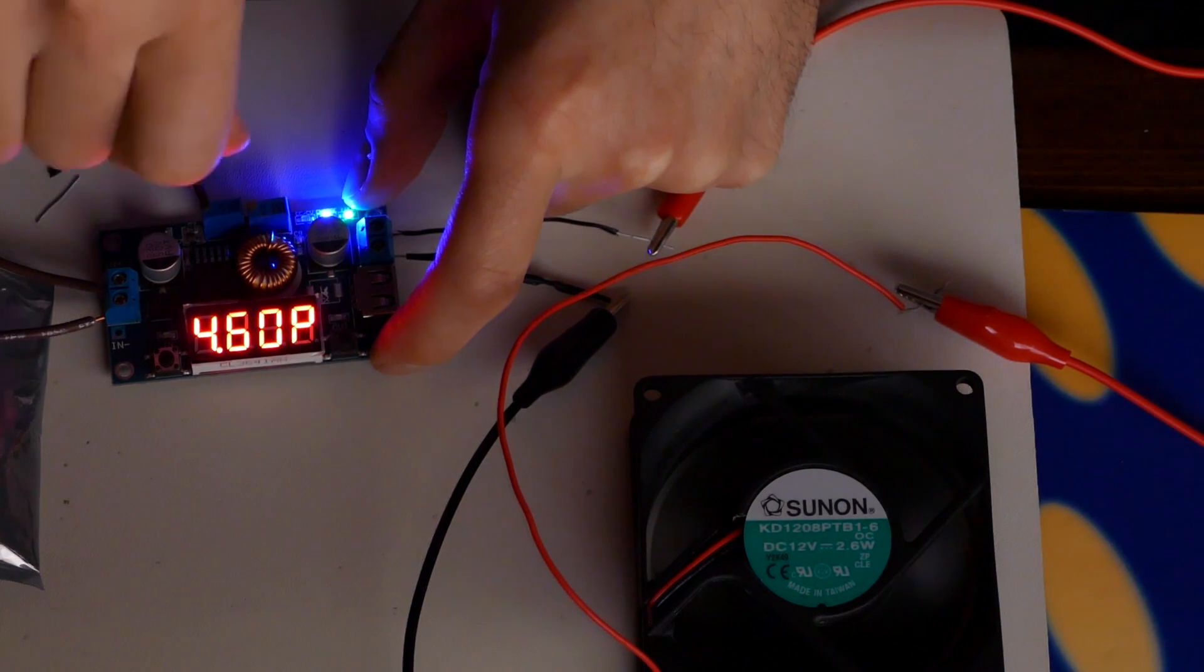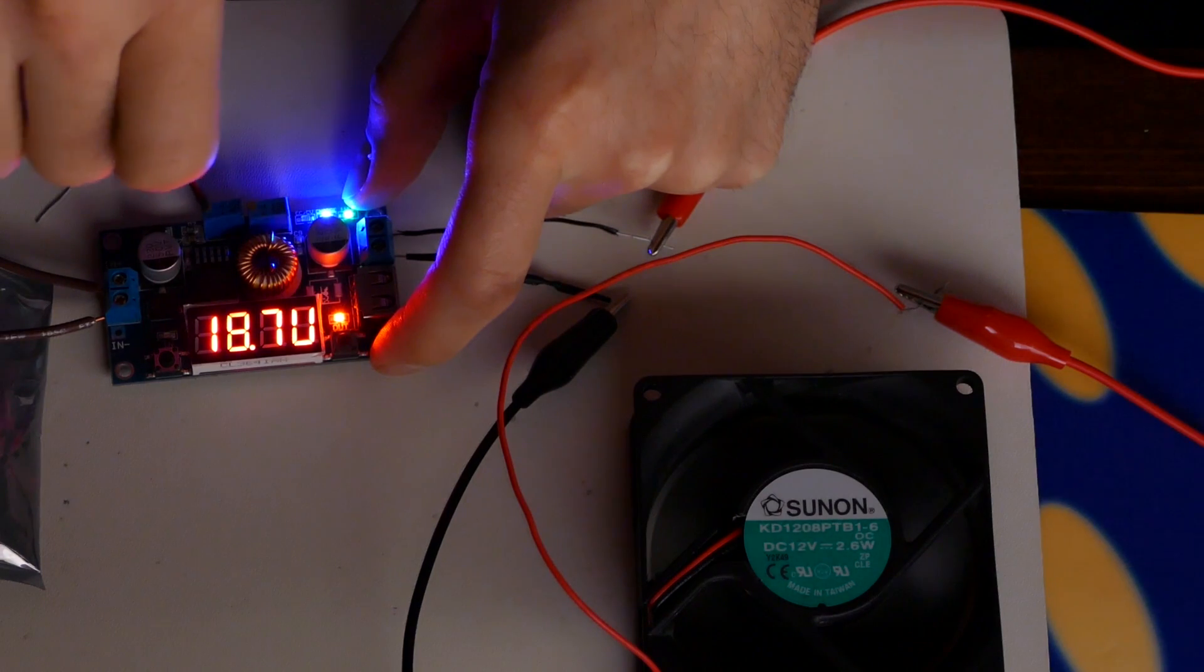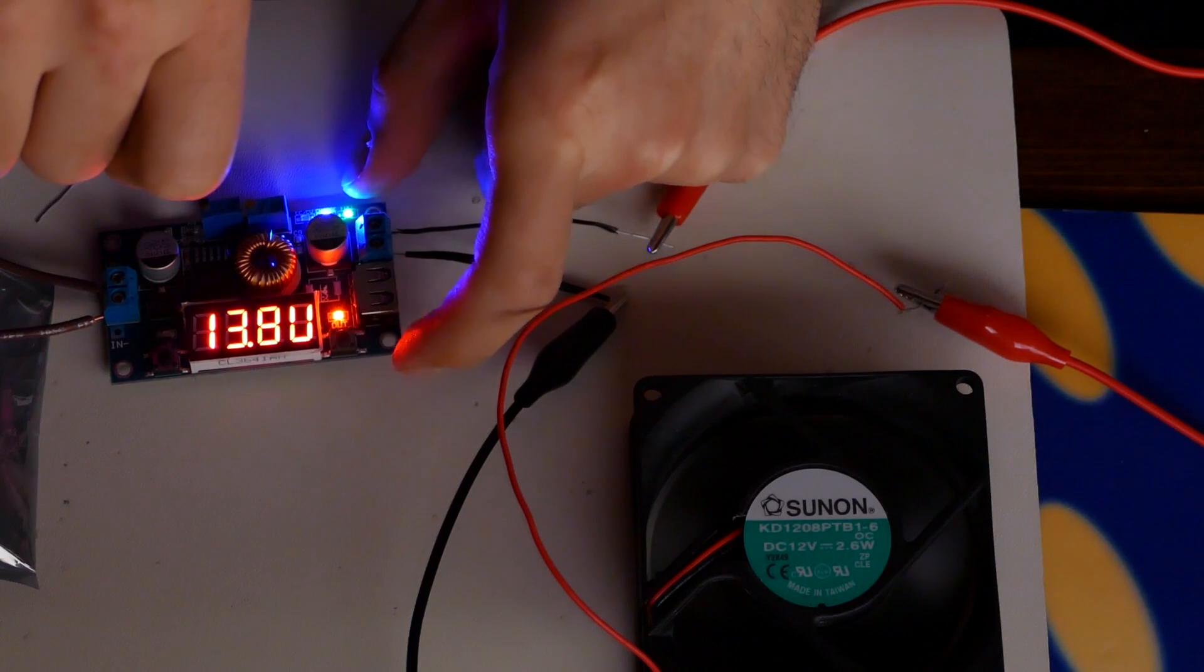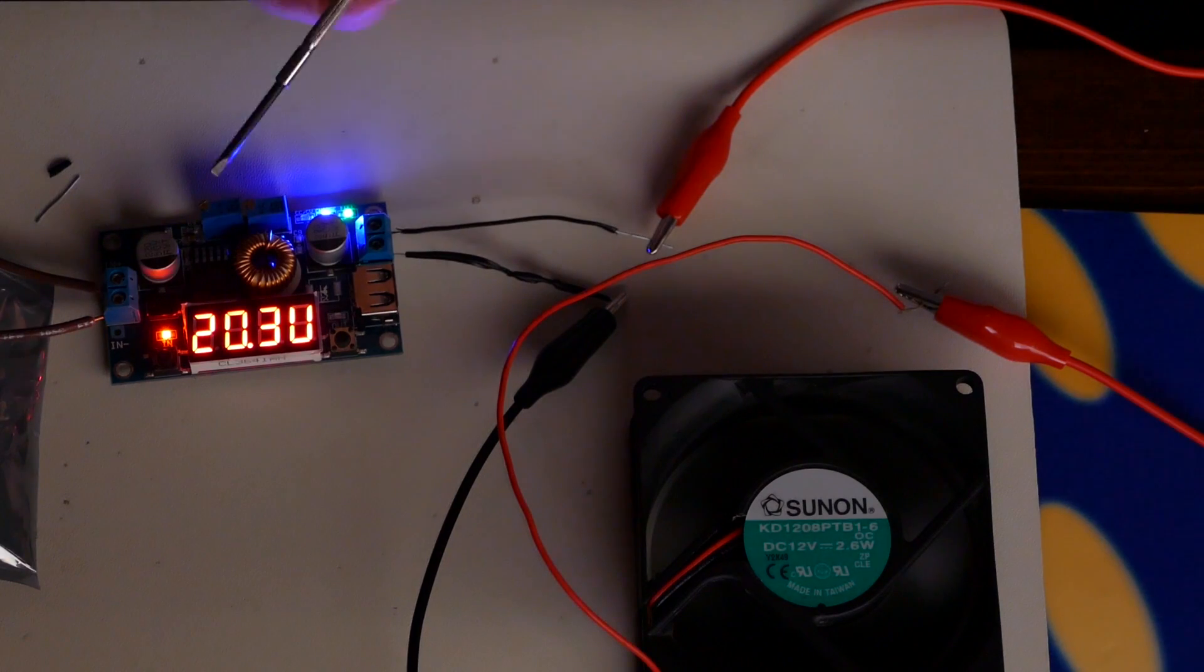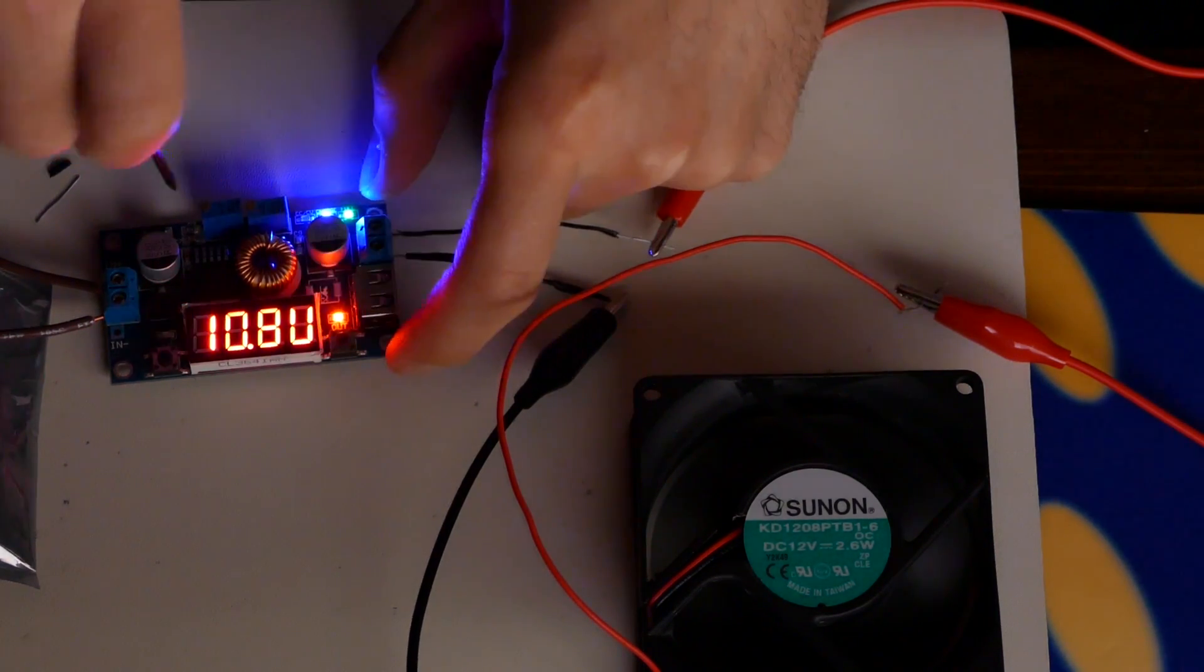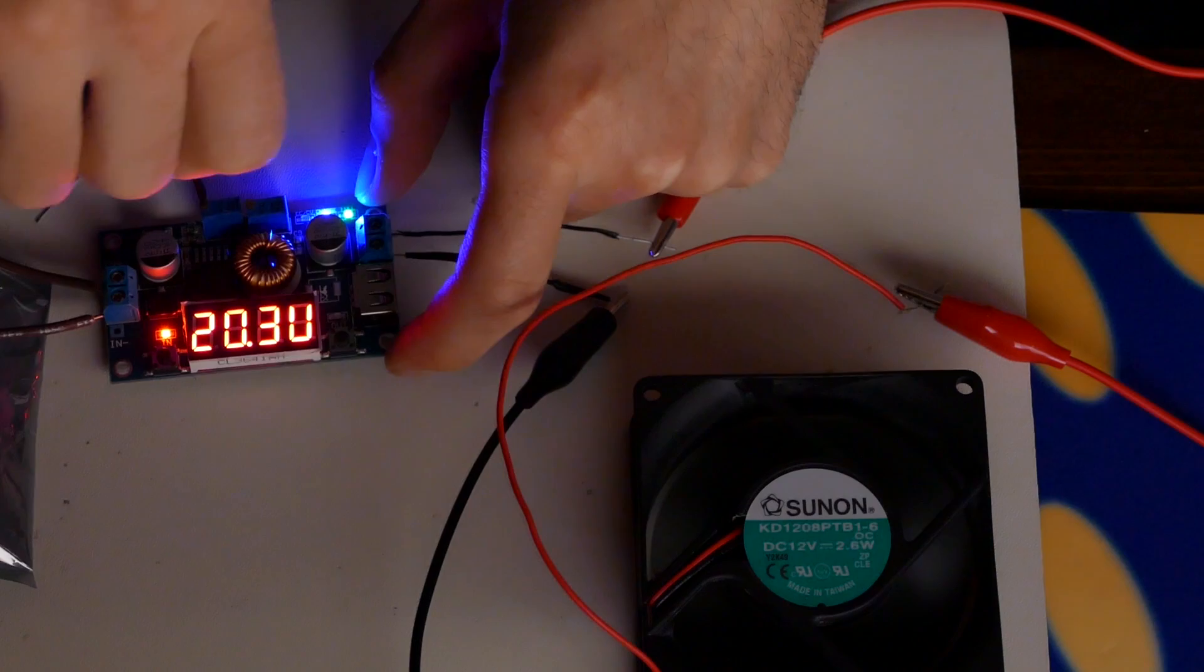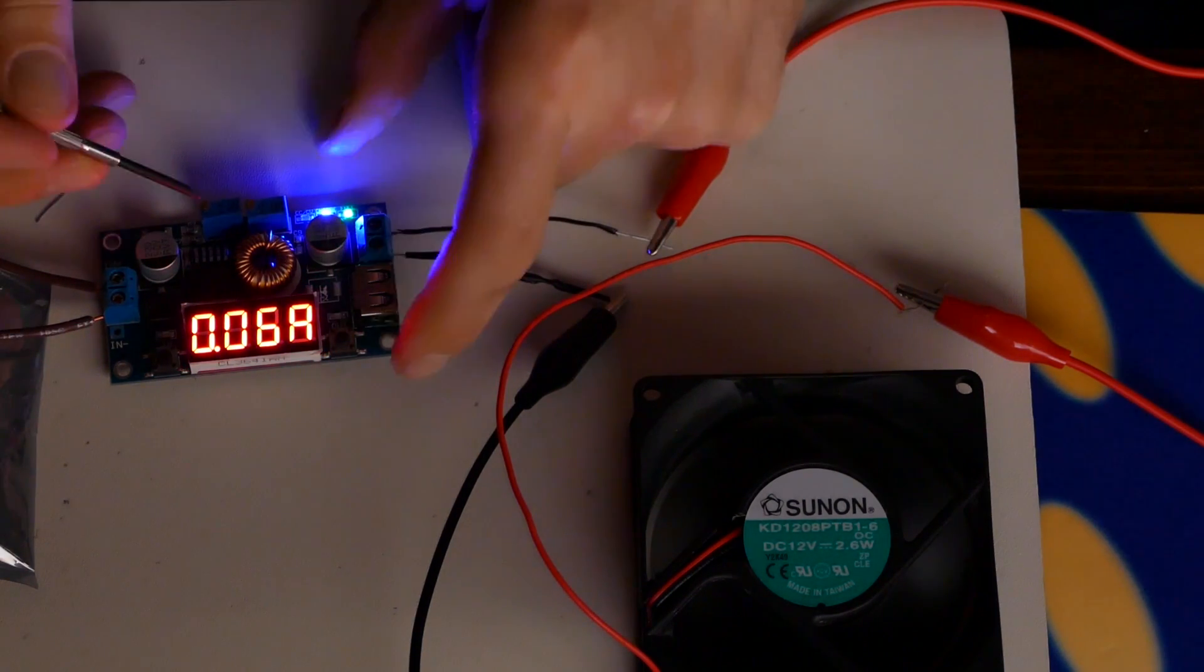So let's turn the voltage down. We should make these screws a little bit bigger. Here it's spinning down. Now you can see that we have 20 volts in, 11 volts out. Turn it down even more. Now we have 20 volts in, 6 volts out. So that's great.